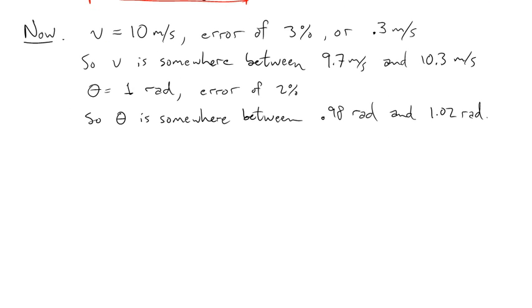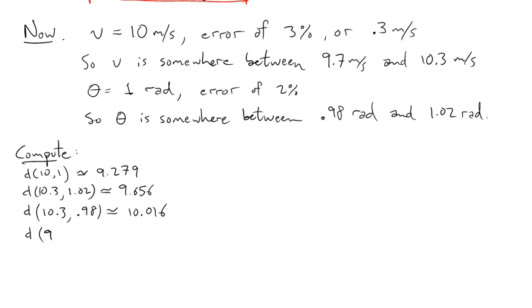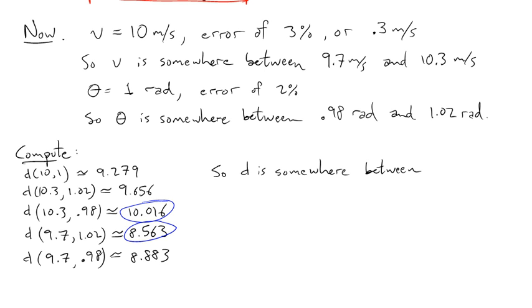Now what we can do is calculate d of v and theta for various values of v and theta. So to start, d of 10 and 1 works out to be about 9.279. And then we can look at 10.3, 1.02, 10.3, 0.98, and so on. Compute these various values of d and read off the min and the max of these. And we can say that d then is somewhere between 8.563 and 10.016 meters.